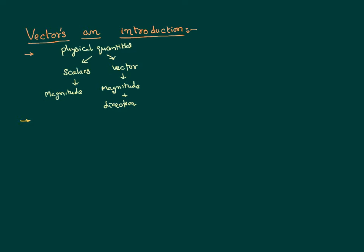How do we represent a vector? A vector is simply represented like an arrow with a head. The head generally gives the direction — this is the direction of the arrow, and it is a graphical representation. The size of the arrow gives the value of the magnitude. Proportionate size means a bigger magnitude means we draw a bigger line, and a smaller magnitude means we draw a smaller line.